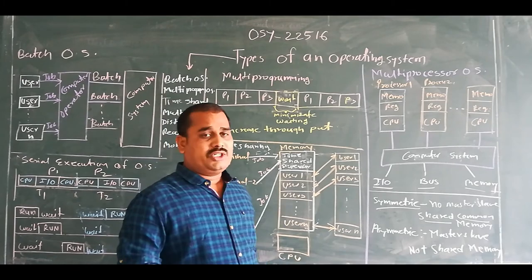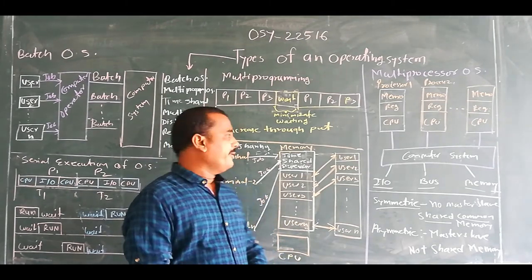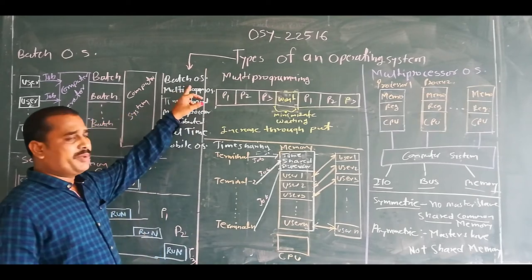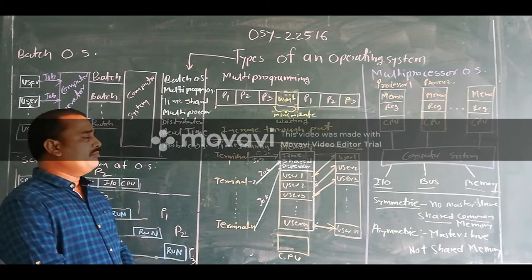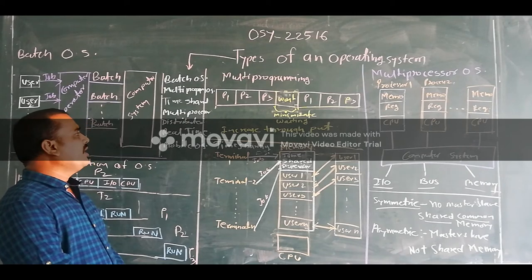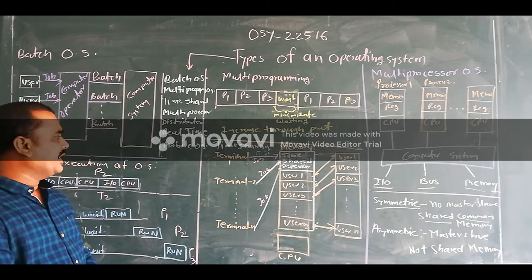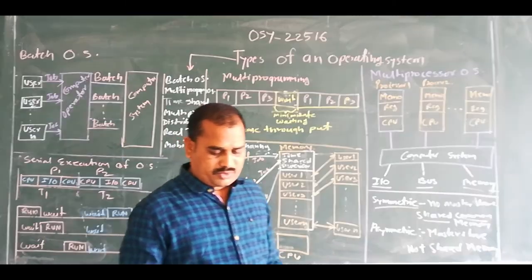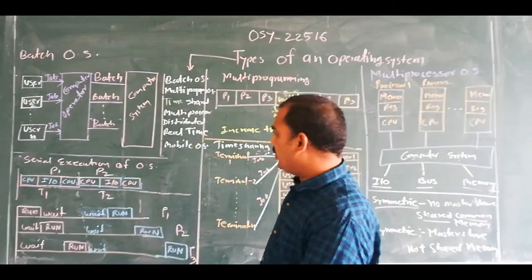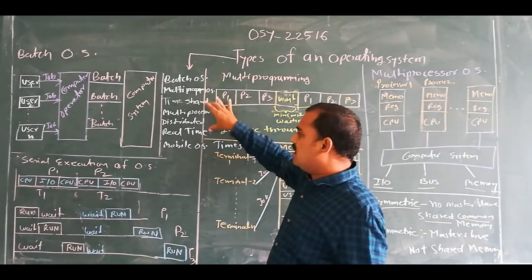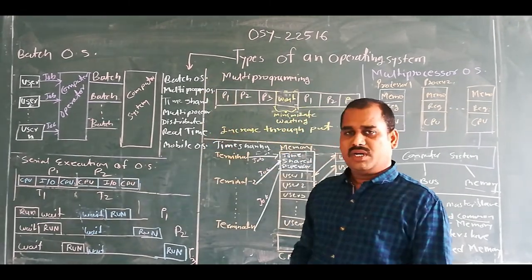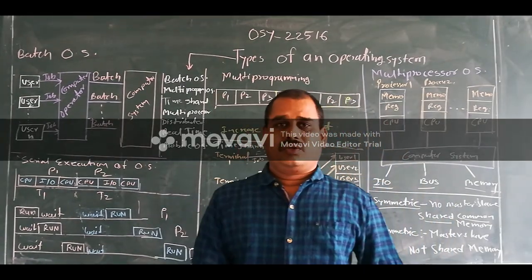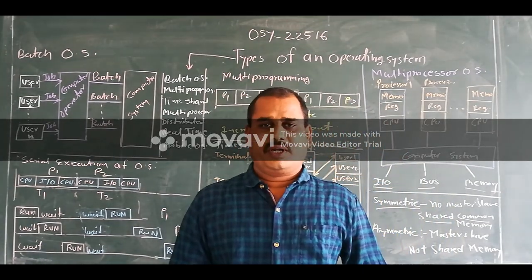So in today's session, we have covered, under the types of operating systems: batch operating system, multiprogramming operating system, time sharing operating system, multiprocessor operating system, distributed operating system, real-time operating system, and mobile OS. Among those, the remaining topics will be covered in the next session. So we want to stop here. Thank you.